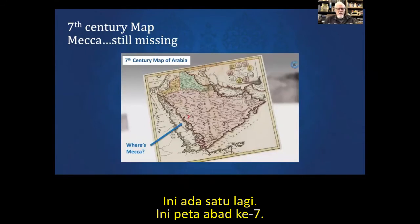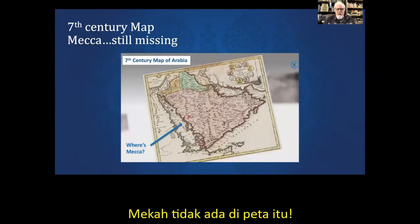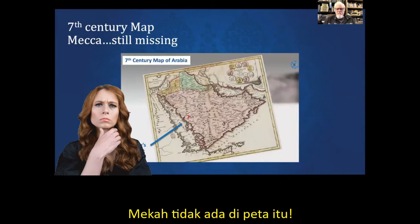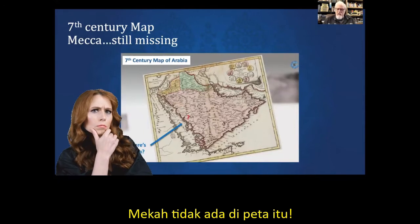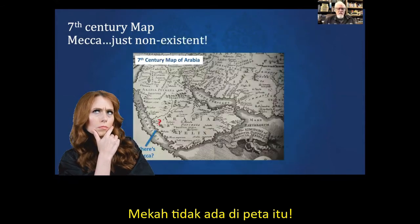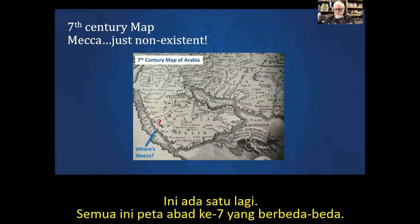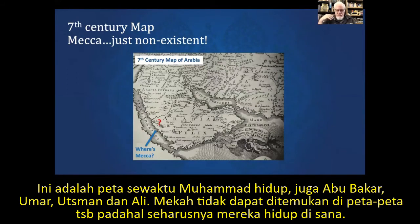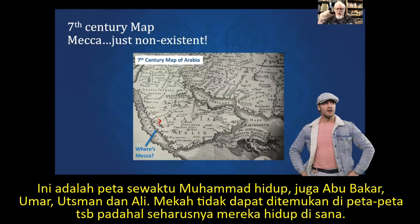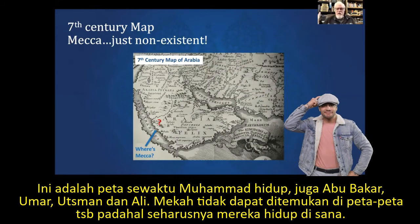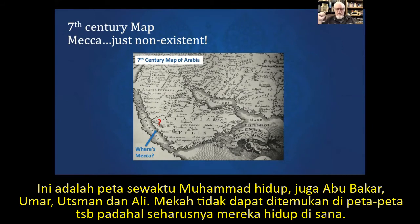Here's another seventh century map — still Mecca is missing. Another one, completely different. These are all completely different maps. This is the time that Muhammad lived, the time of Abu Bakr, Umar, Uthman, and Ali. You cannot find Mecca at all — yet they should all have been living down there. Nothing.